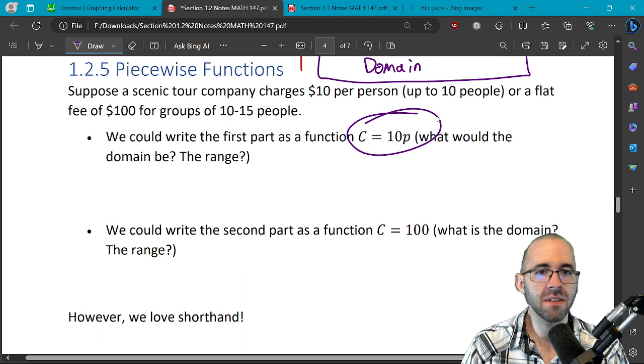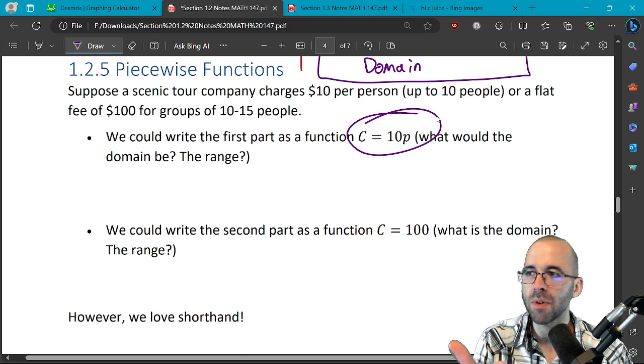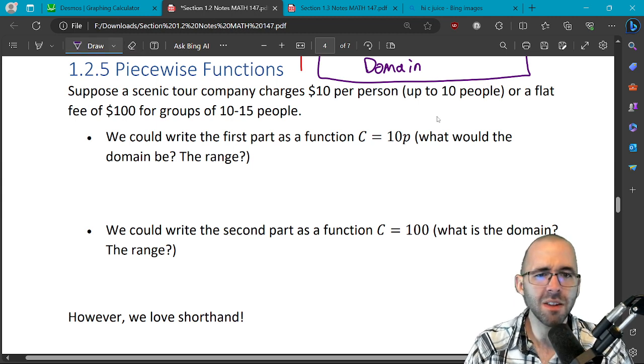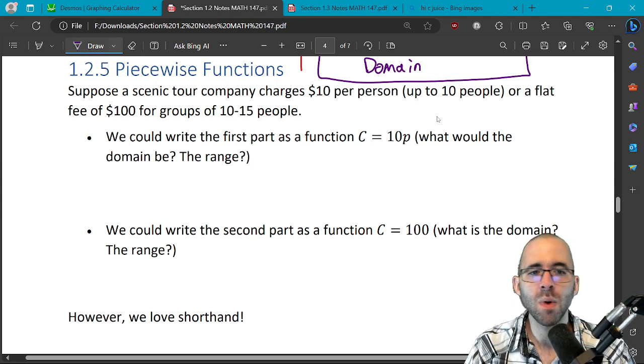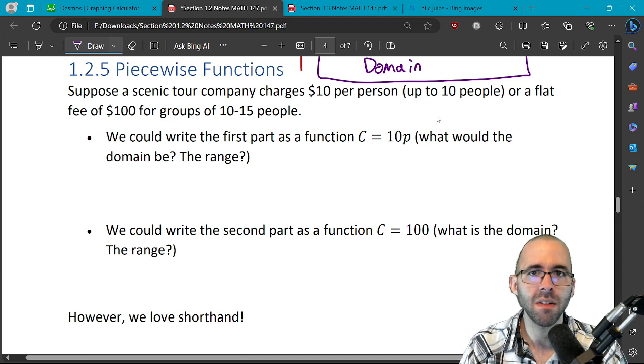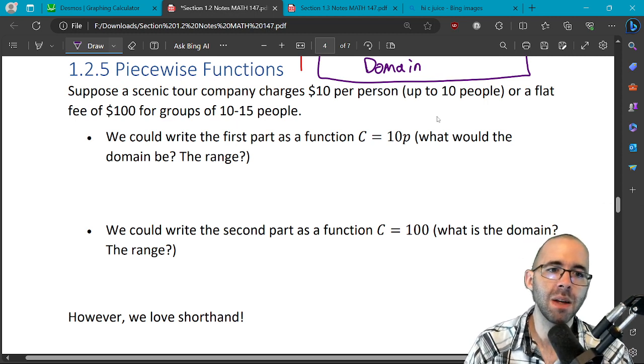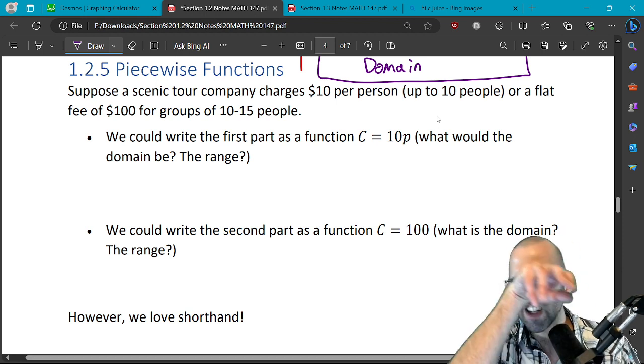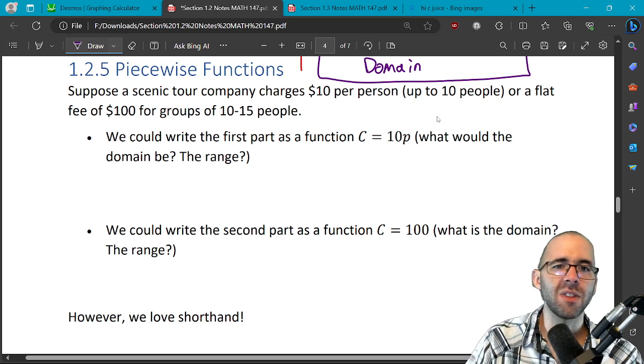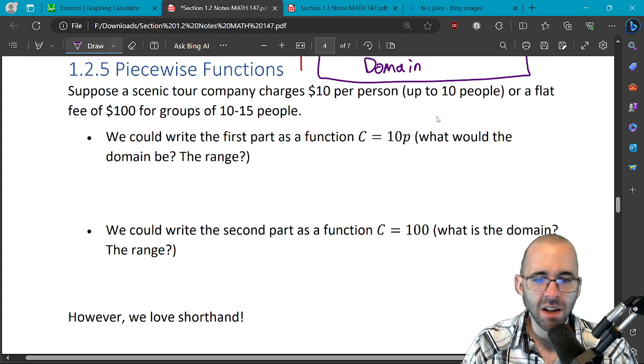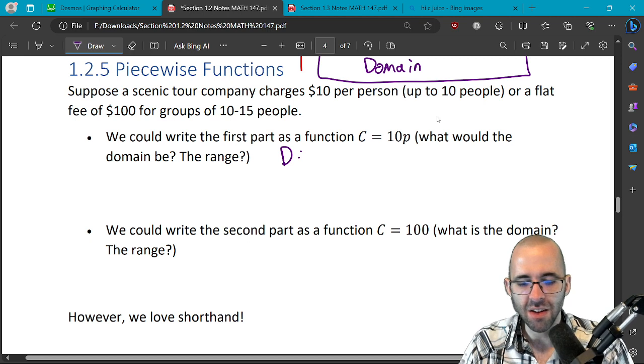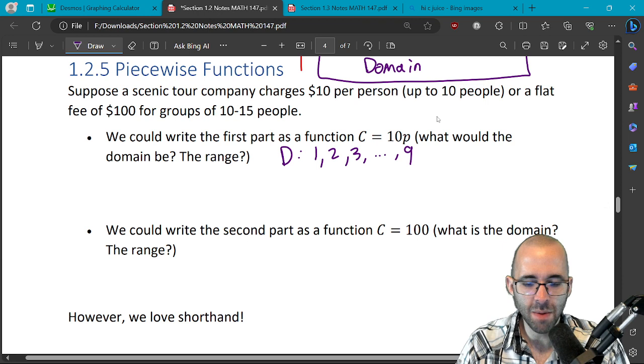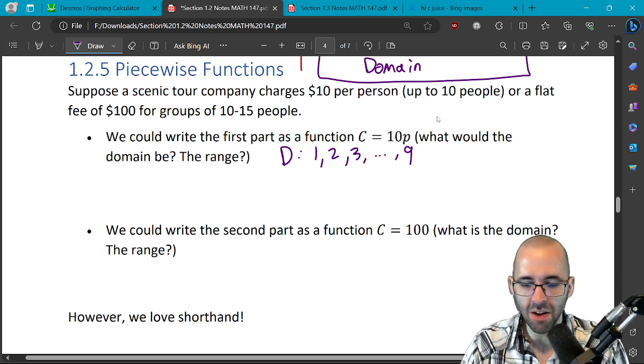We could write the first part as a function like this: the cost is just 10 times however many people. The ten dollars per person, well three people that's three times 10, 30 bucks. Question is what would the domain be here? Well we're not going to have zero people, we could have nine people, and we're not going to have fractional people. So really the domain here would look like it could be one, it could be two, it could be three, all the way up to nine, well actually it says all the way up to ten.